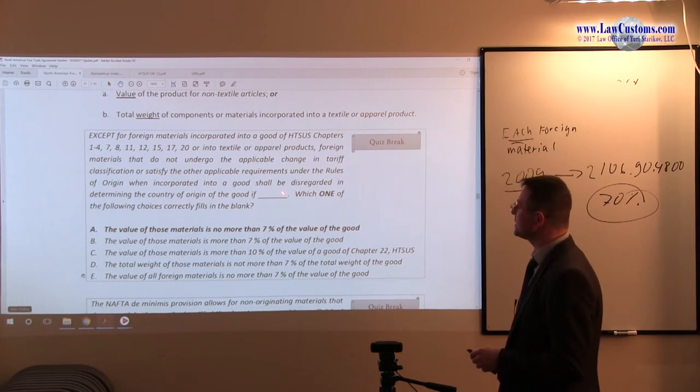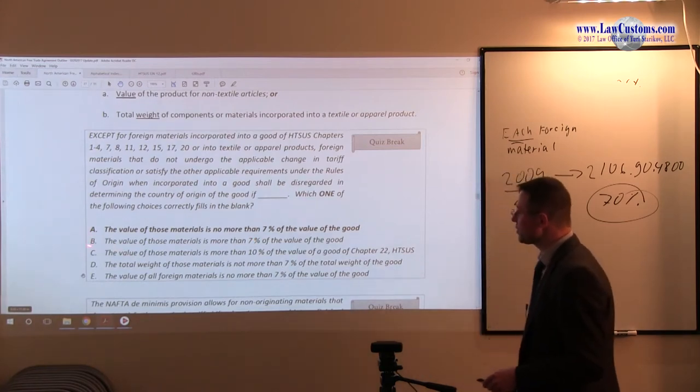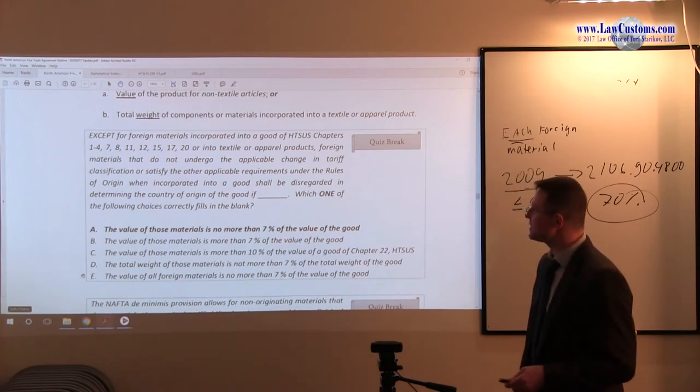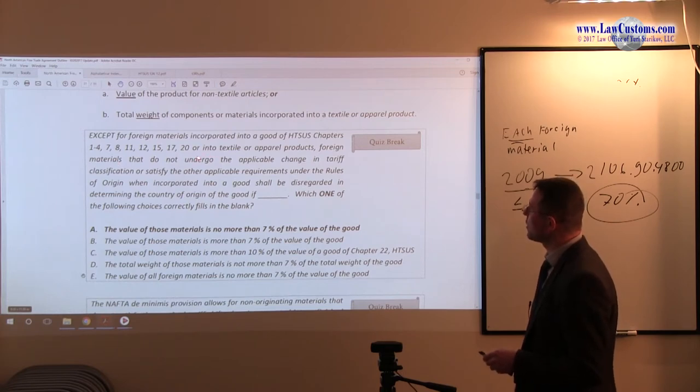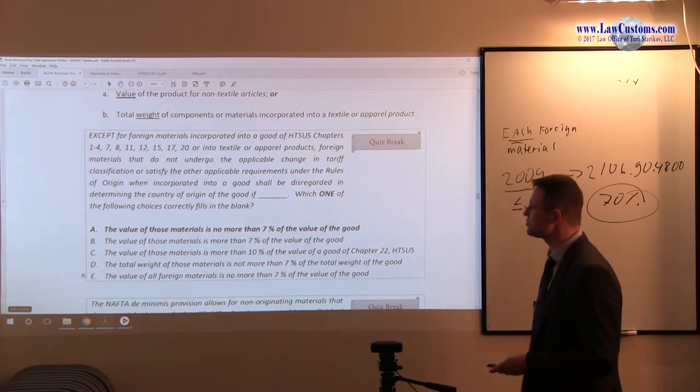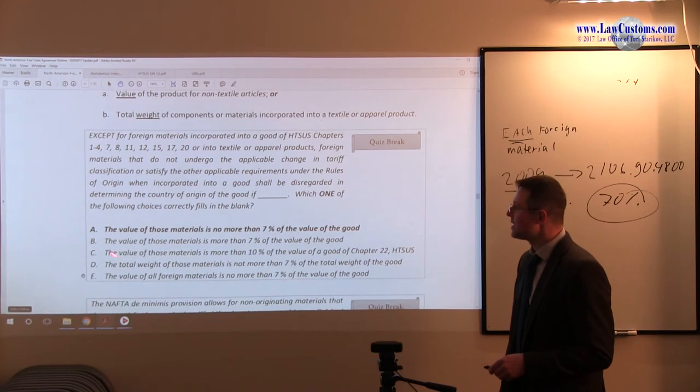If the country of origin of the good, if you have this 7 and 10% rule, let's take a look. The value of those materials is no more than 7% of the value if it is non-textile. Because we have except for those or except for textiles, it is 7% rule. So the examiners are testing you on the general rule on rules of general applicability. So the key buzzwords here is the value and 7%. So A is correct. The value of those materials is more than 7% of the value of the good? No.